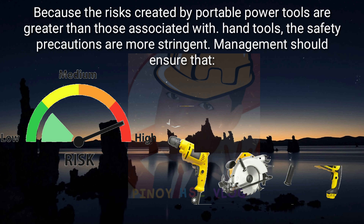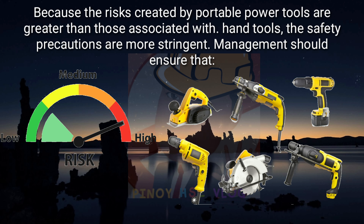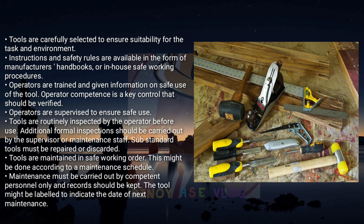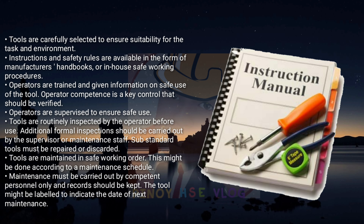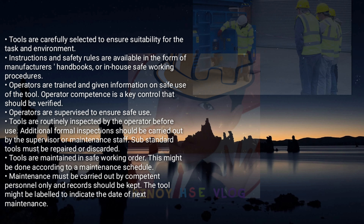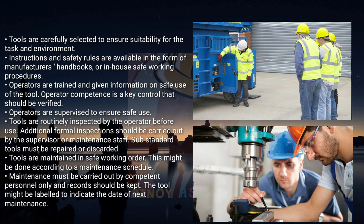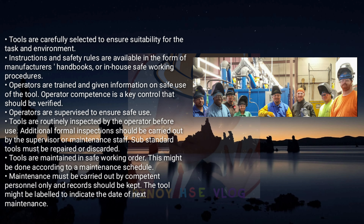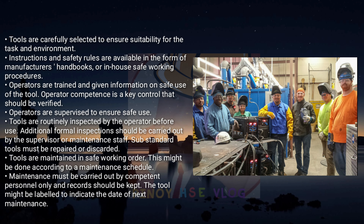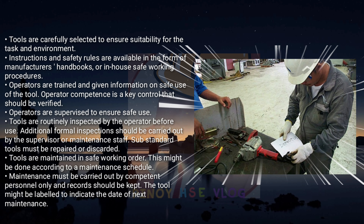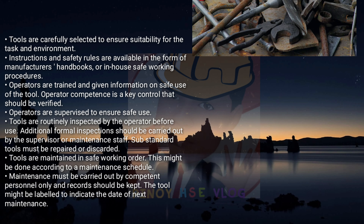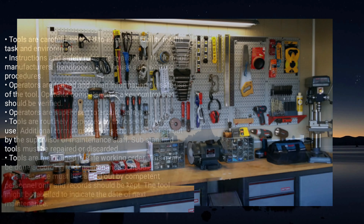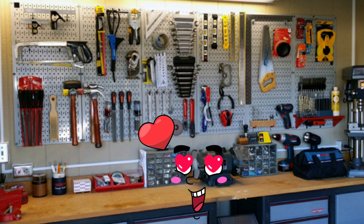Because the risks created by portable power tools are greater than those associated with hand tools, the safety precautions are more stringent. Management should ensure that tools are carefully selected for suitability for the task and environment; instructions and safety rules are available in the form of manufacturers' handbooks or in-house safe working procedures; operators are trained and given information on safe use; operator competence is a key control that should be verified; operators are supervised to ensure safe use; tools are routinely inspected by the operator before use, with additional formal inspections carried out by the supervisor or maintenance staff; and substandard tools must be repaired or discarded.